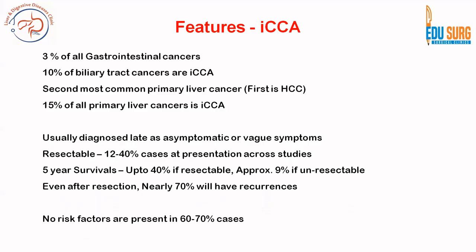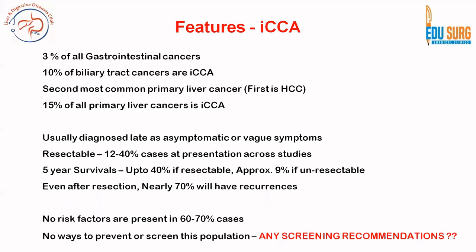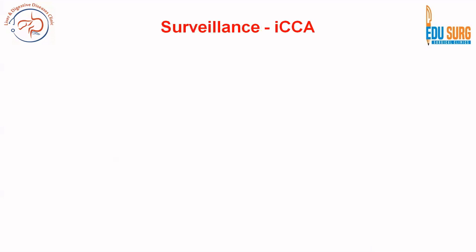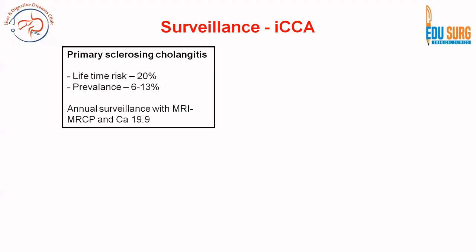No risk factors are present in almost 70% of cases, which makes it difficult to have screening recommendations. Primary sclerosing cholangitis is a very strong risk factor — its prevalence is 6 to 13% and lifetime risk of cancer development is 20%. In these cases, annual MRI, MRCP, and CA 19-9 is recommended as a surveillance measure to identify disease early.